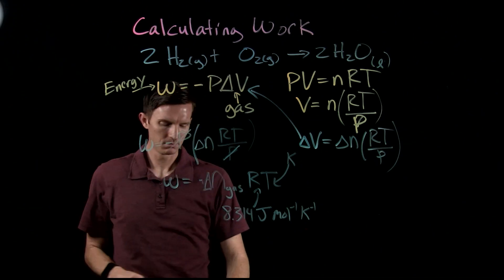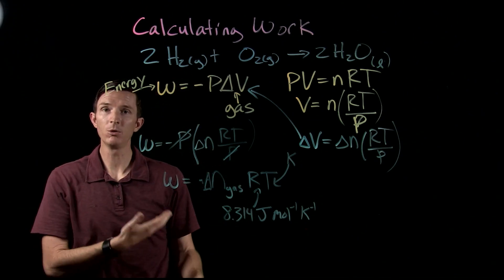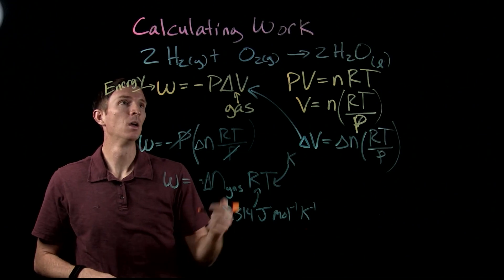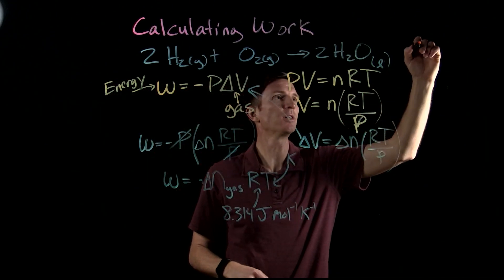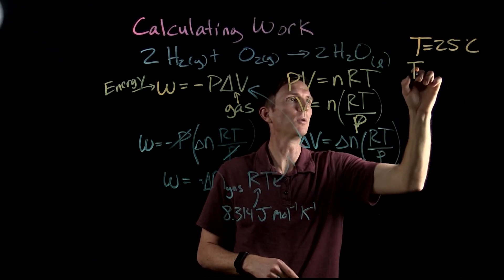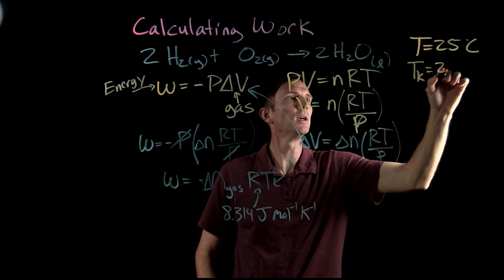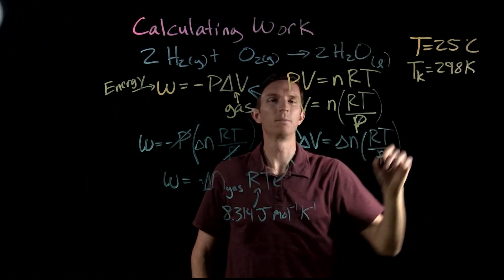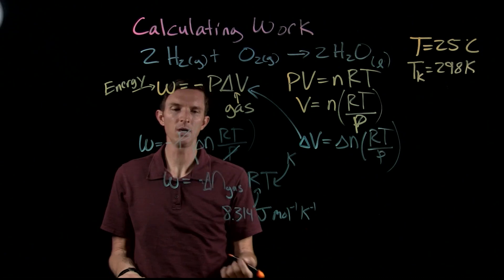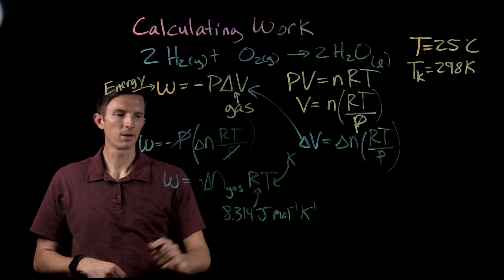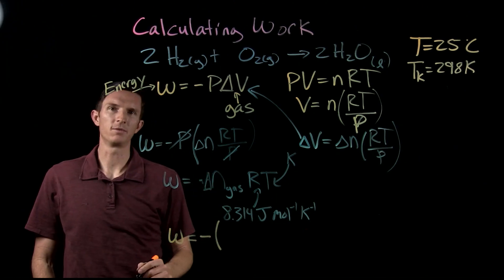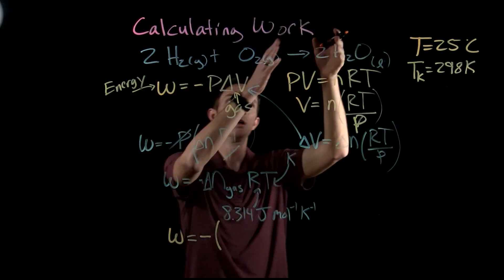So now going back to this reaction, can we actually quantify how much work may be done by or on our system, our reaction? Well, we have a reaction here. Let's go ahead and say that this was done at 25 degrees Celsius, or we could say 298 Kelvin. So now we know the temperature that it's occurring at, R is a constant, we need to calculate the work. Well, we can say our work is equal to negative the change in number of moles of gas. So that would be